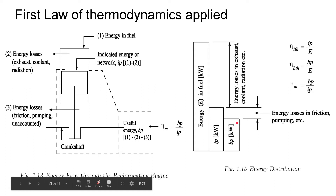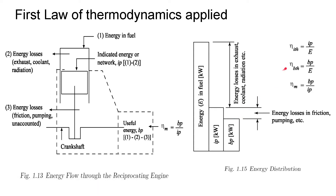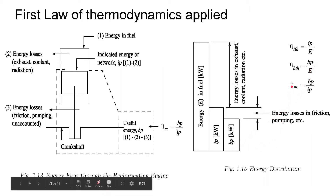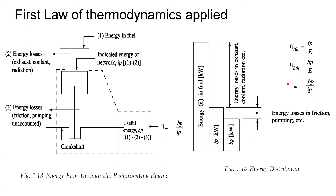Hence we can define thermal efficiency in many different ways. The first is indicated thermal efficiency: eta_ITH = IP / (total energy available in fuel). Brake thermal efficiency: eta_BTH = BP / E. Mechanical efficiency: eta_M = BP / IP, which is generally 60 to 80%. eta_ITH will be larger than eta_BTH because BP is smaller than IP, with eta_ITH around 30–50%.